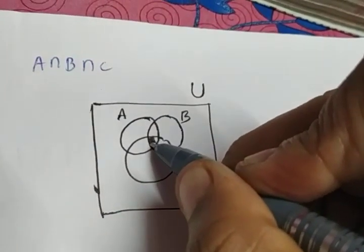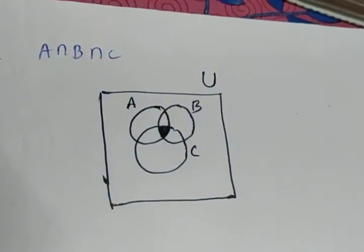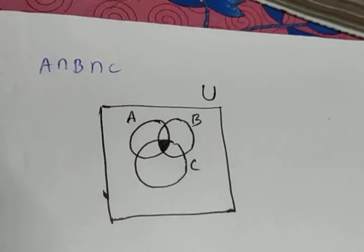If I am shading it this portion, this portion represents the region A intersection B intersection C. Okay. One more.